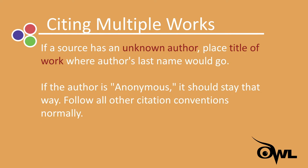To cite a source with an unknown author, simply place the title of the work where the author's last name would typically go. If the author is explicitly listed as anonymous, however, 'Anonymous' should take the place of the author's name. Follow all other citation conventions normally.